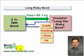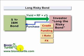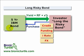Hi, this is David Harper of Bionic Turtle with an illustration of how an investor can take a synthetically long position in a risky bond by using the credit default swap. To illustrate, for the risky bond we'll use a five-year bond issued by IBM. IBM has a strong credit rating, so there is a very small chance of default, but there is some chance of default, so we can call it a risky bond.